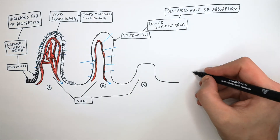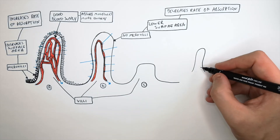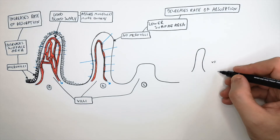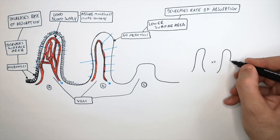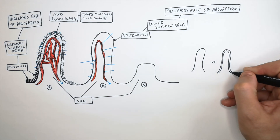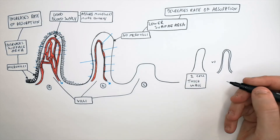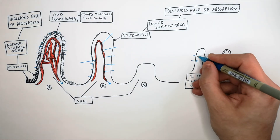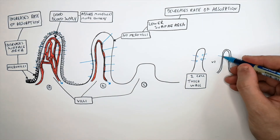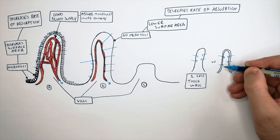Another adaptation of the villi is that it's got a one cell thick membrane. I'm drawing two villi here: the first has a one cell thick membrane and the second has a two cell thick membrane. If the wall of the villi is one cell thick, molecules have less distance to diffuse across, whereas if there are two cells in the wall, the molecules have to diffuse further and that will take longer.